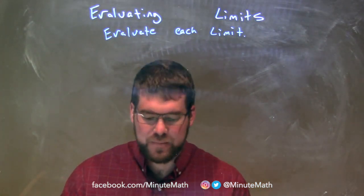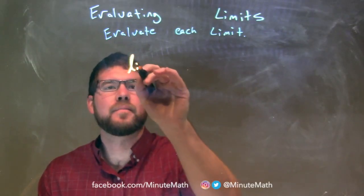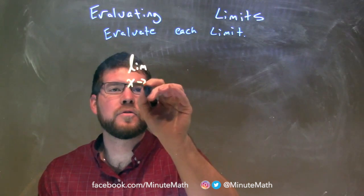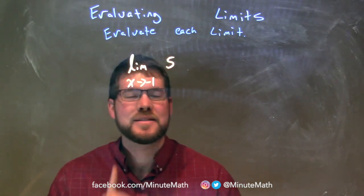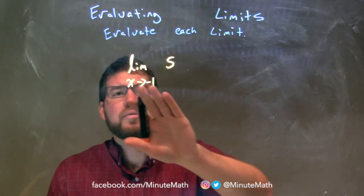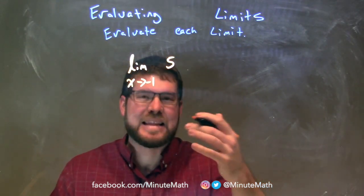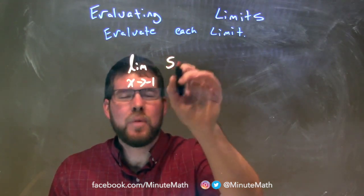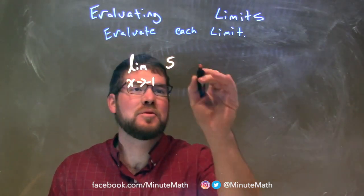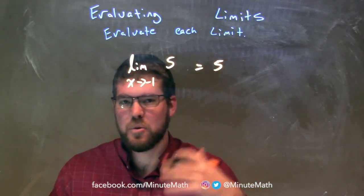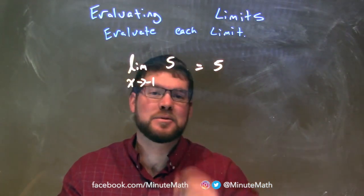We're going to evaluate each limit. The limit as x approaches negative 1 of 5. Now, one thing we know is that 5 is just a constant. So as x approaches negative 1, if you graph it, y equals 5. There's no x value to plug in. Since we have a constant here, the limit is just equal to 5 — 5 is always constantly there, so the limit is equal to 5.